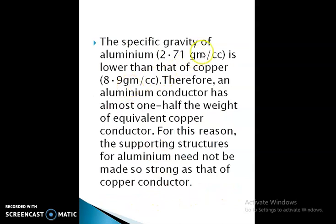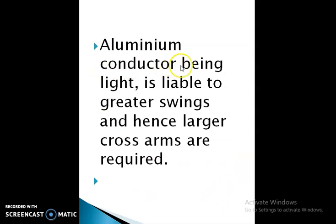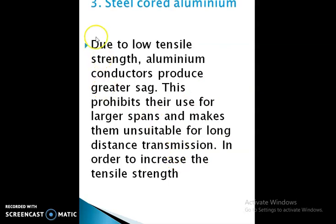The specific gravity of aluminum is 2.71 g/cc, which is lower than that of copper at 8.9 g/cc. Therefore, an aluminum conductor has almost one half the weight of an equivalent copper conductor. For this reason, supporting structures for aluminum need not be made as strong as those for copper conductors. However, the aluminum conductor being light is liable to greater swing, and hence larger cross arms are required.